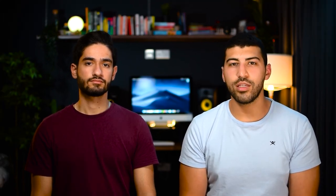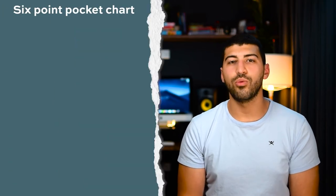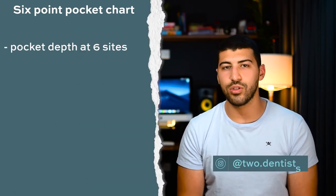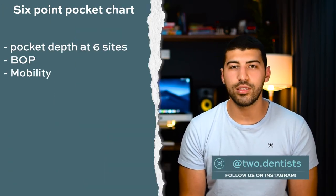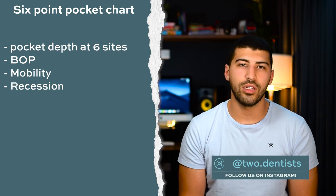This will reduce any false pocketing, and if it was real pocketing, sometimes just good oral hygiene is enough to close the pocket. Once you have the patient back after 8-12 weeks, you do a 6-point pocket chart in the involved sextants. This will record the pocket depths at 6 sites on each tooth, bleeding on probing, mobility, recession and furcations.